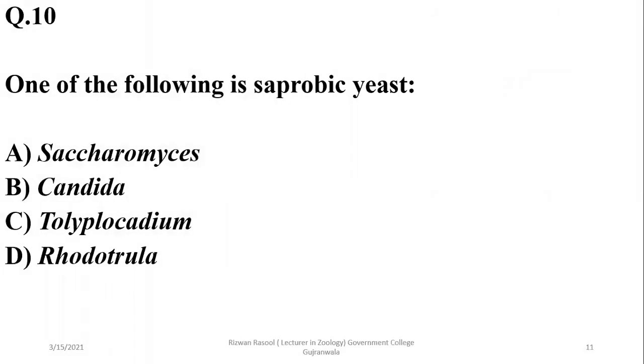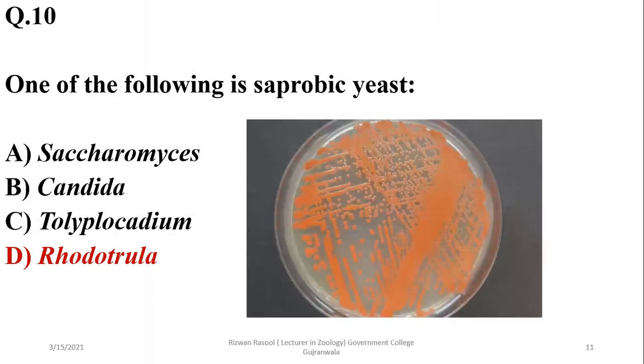Which of the following is a saprobic yeast? It is Rhodotorula, which is saprotrophic or saprobic yeast. It's also known as pink yeast due to their characteristic color on the petri dish.